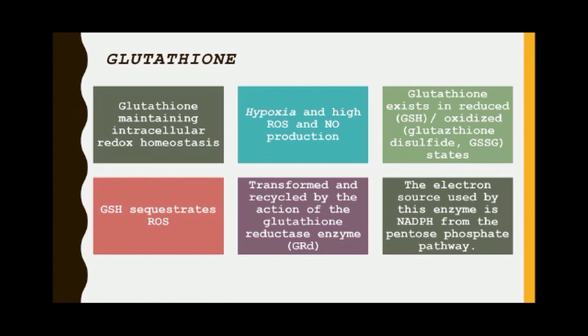In this video we are going to discuss two important antioxidant defense systems: glutathione and NRF2. Glutathione has an indispensable role in maintaining intracellular redox homeostasis, usually during hypoxia and high production of ROS and reactive nitrogen species. Glutathione exists in a reduced form, GSH, and an oxidized form, glutathione disulfide (GSSG).